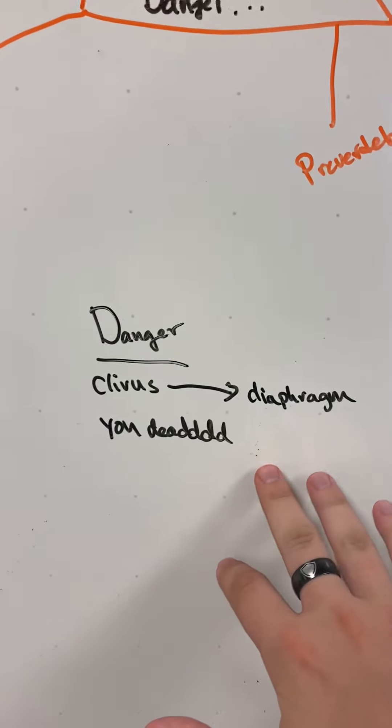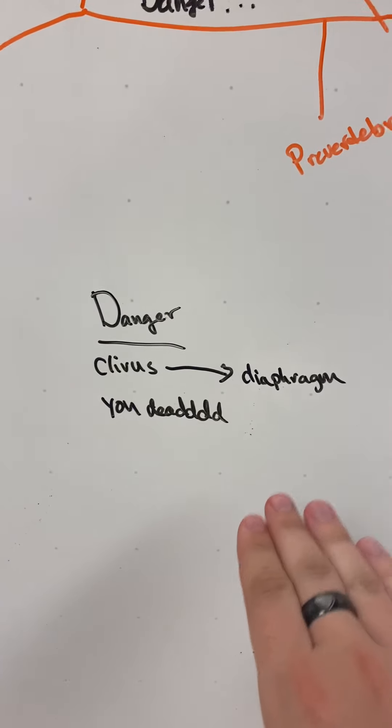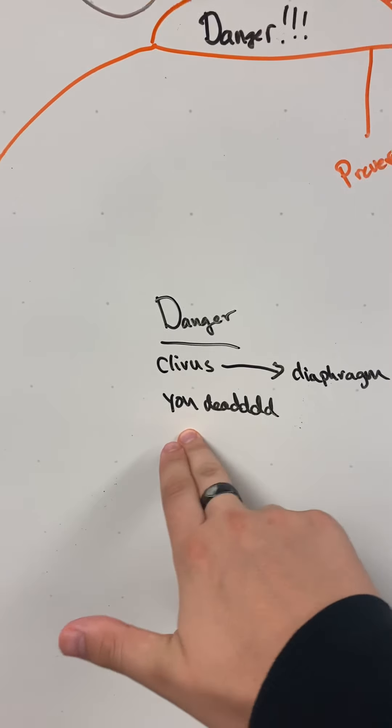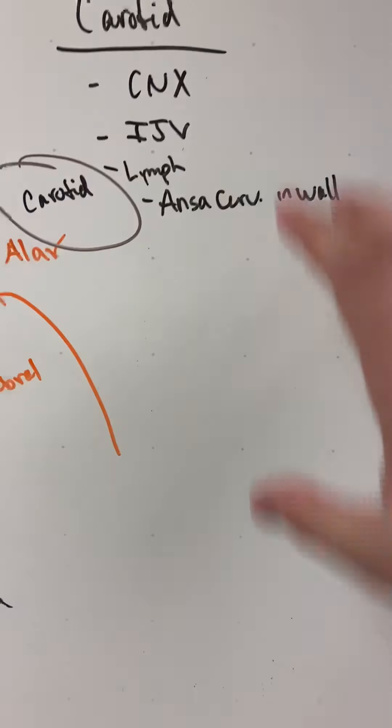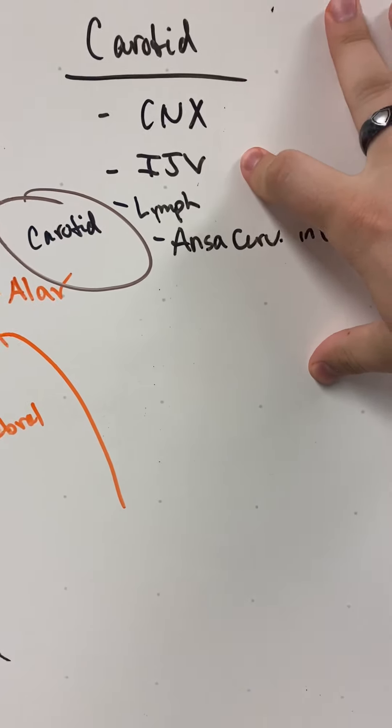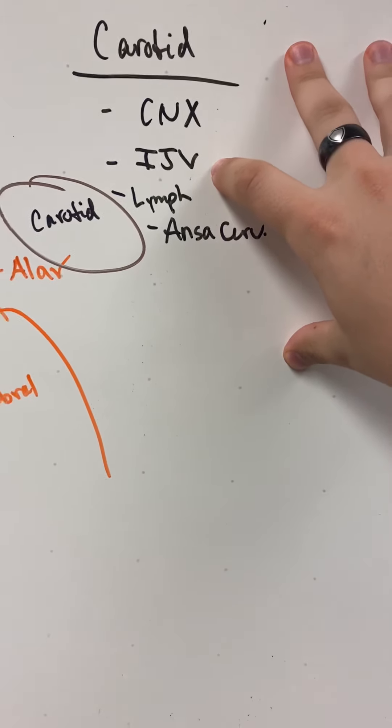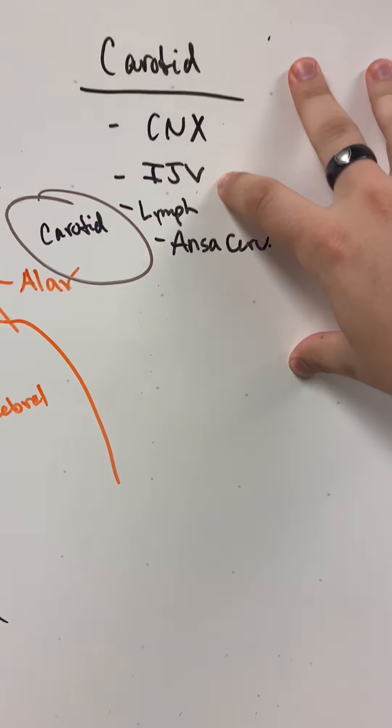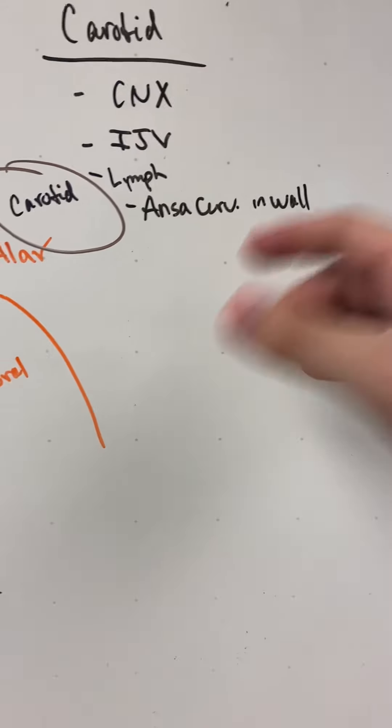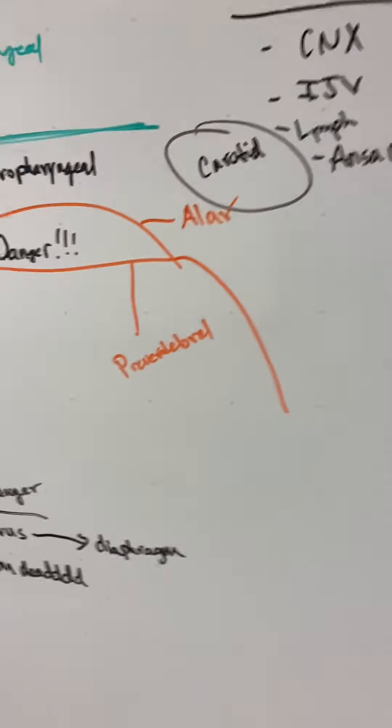The dangerous space is far worse. It goes from the clivus all the way down to your diaphragm, way deep into your gut. So you're dead. And if it goes into your carotid, these are the things it might impact: cranial nerve 10, your internal jugular vein that drains almost everything in your face, some cervical lymph, and the ansa cervicalis embedded in the wall of that carotid.